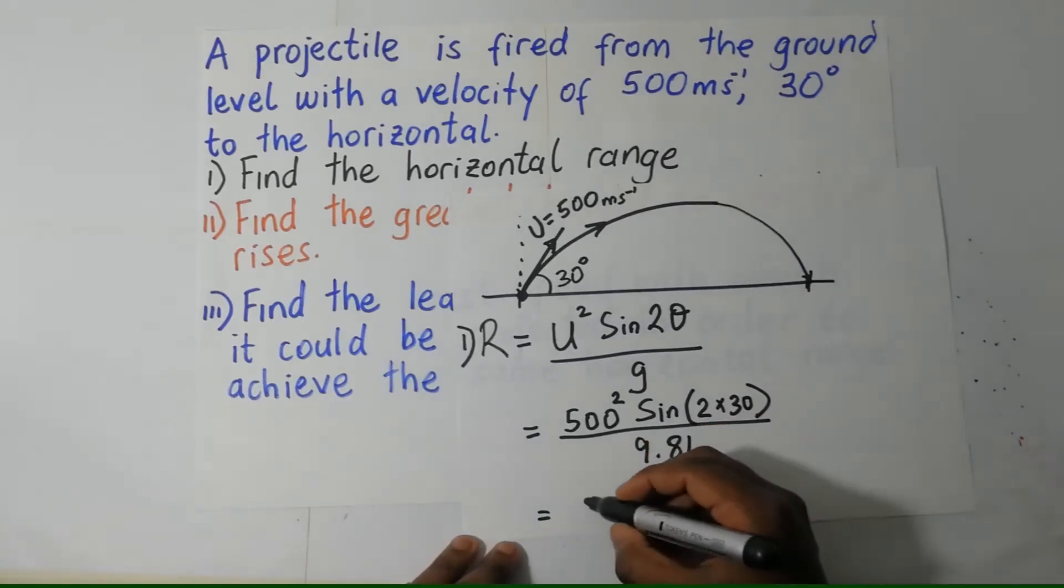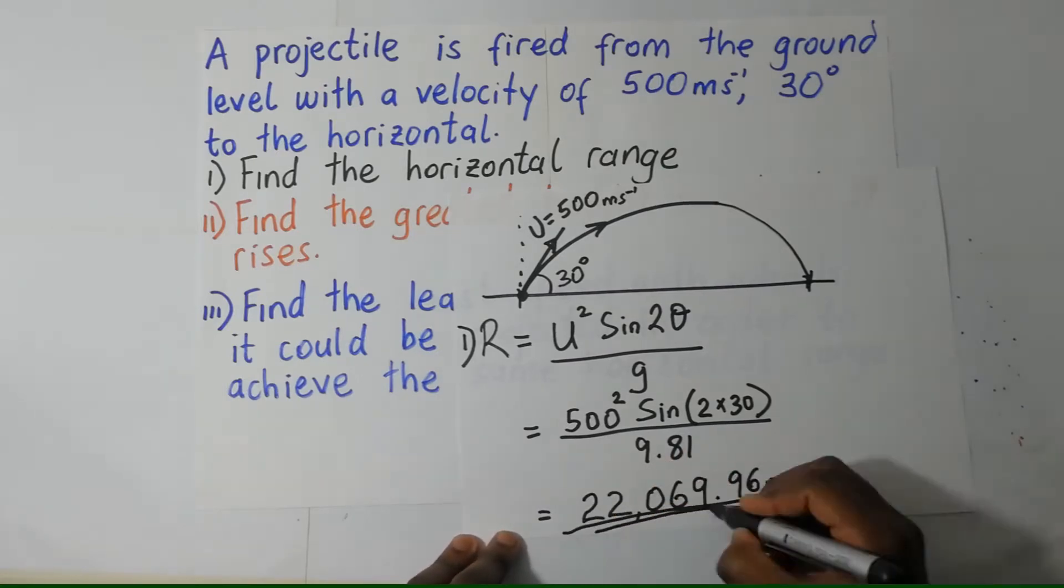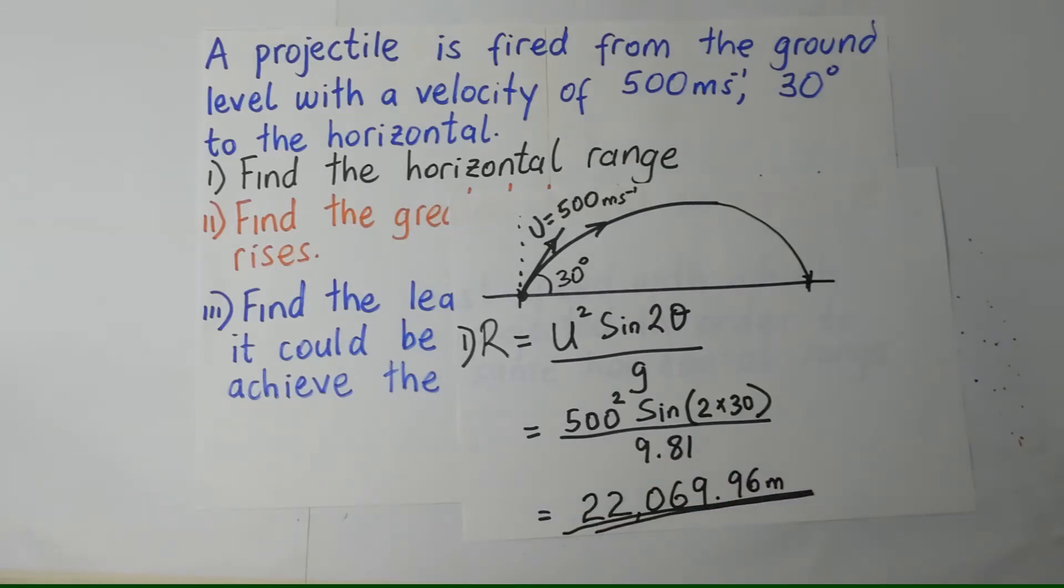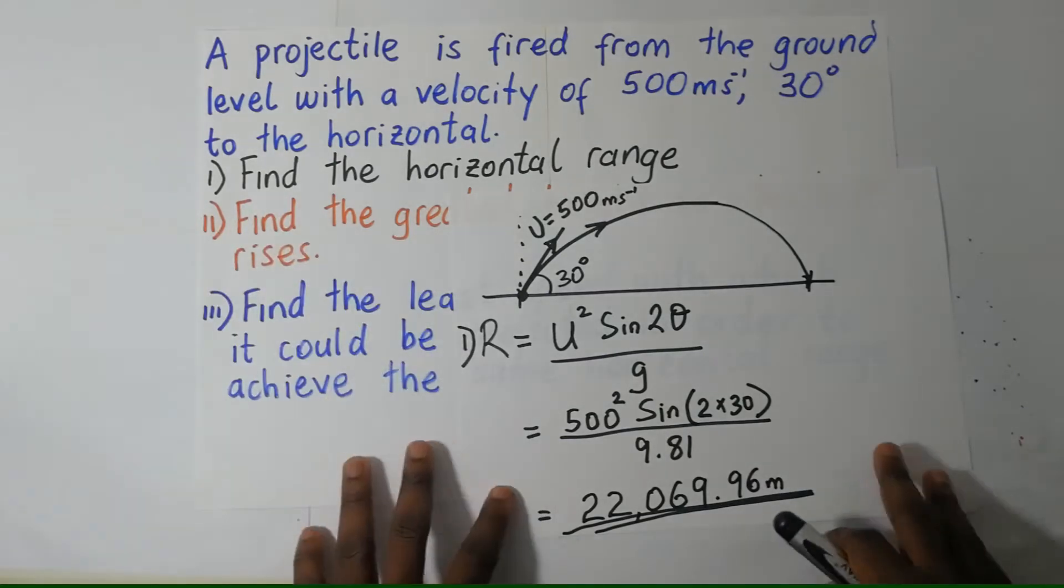So this gives us, and that's it. That's our Roman 1. That's the horizontal range.